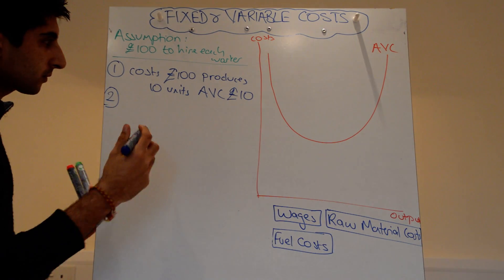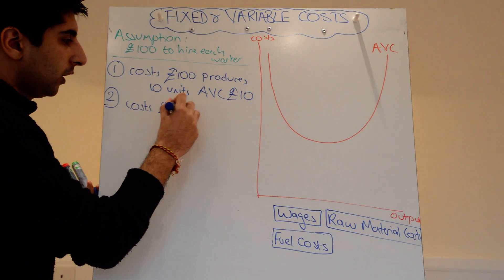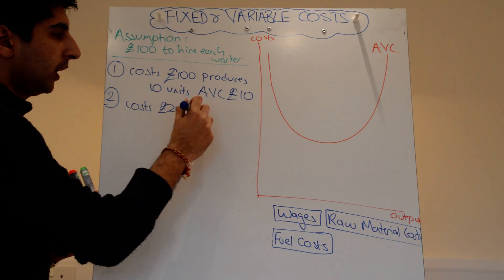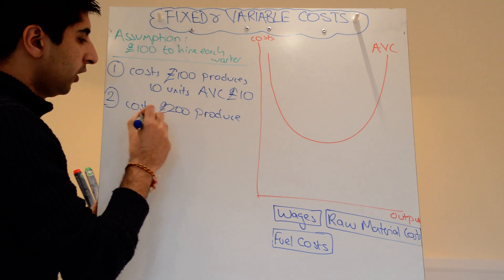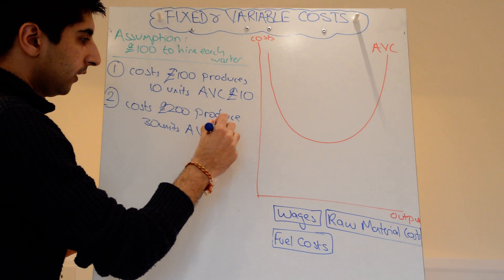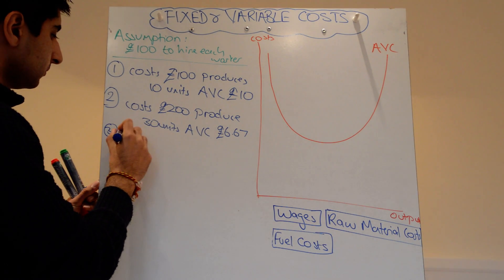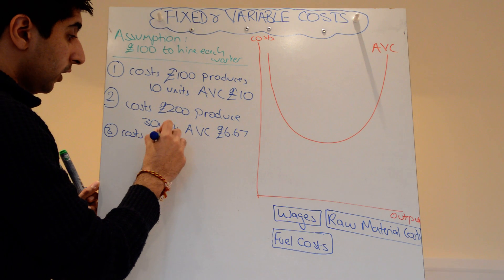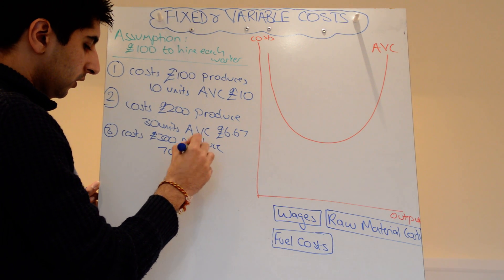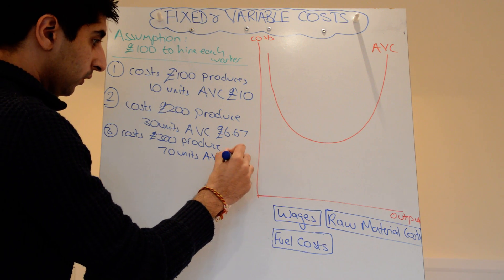So, worker one costs £100 and let's say that worker produces 10 units. The average variable cost is £100 divided by 10 = £10. For the second worker, total variable costs rise to £200, and let's say they produce 30 units in total — so average variable cost is now £6.67. Three workers costs £300; let's say they produce 70 units, so average variable cost is now £4.28.